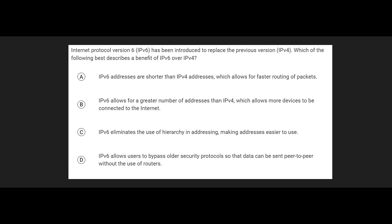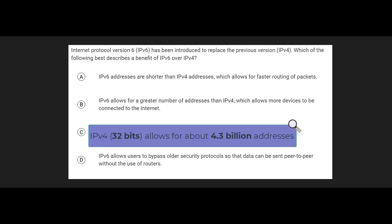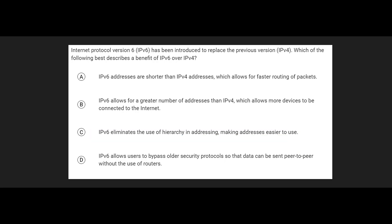The number of addresses IPv4 can support is roughly 4.3 billion, which seems like a lot, but at some point the world's population exceeds that, and everyone will be connected with more than one device. So at some point, IPv6 will be necessary for everyone. There are other benefits of IPv6 over IPv4, but the most important one is that it allows for a greater number of addresses, which allows far more devices to be connected to the Internet.